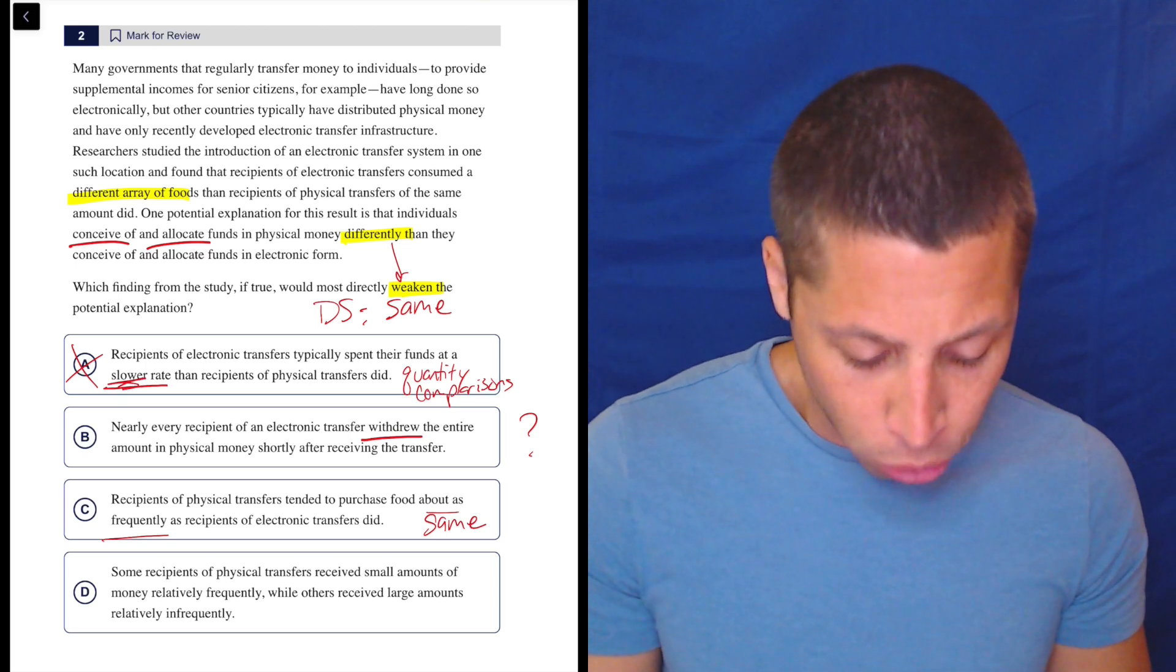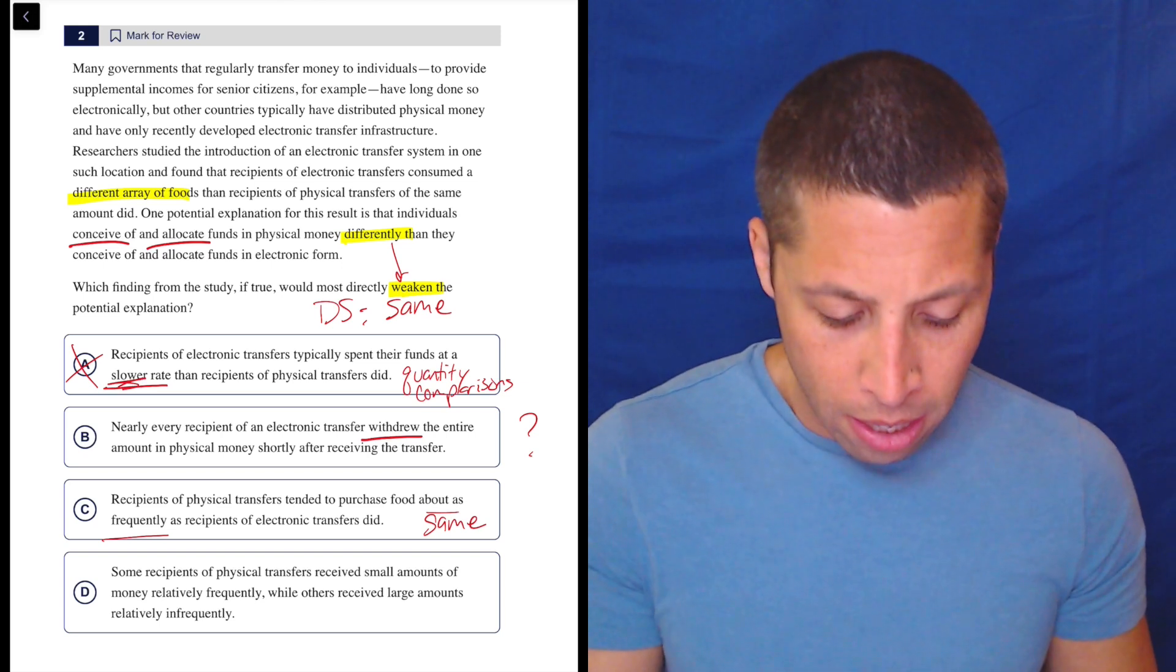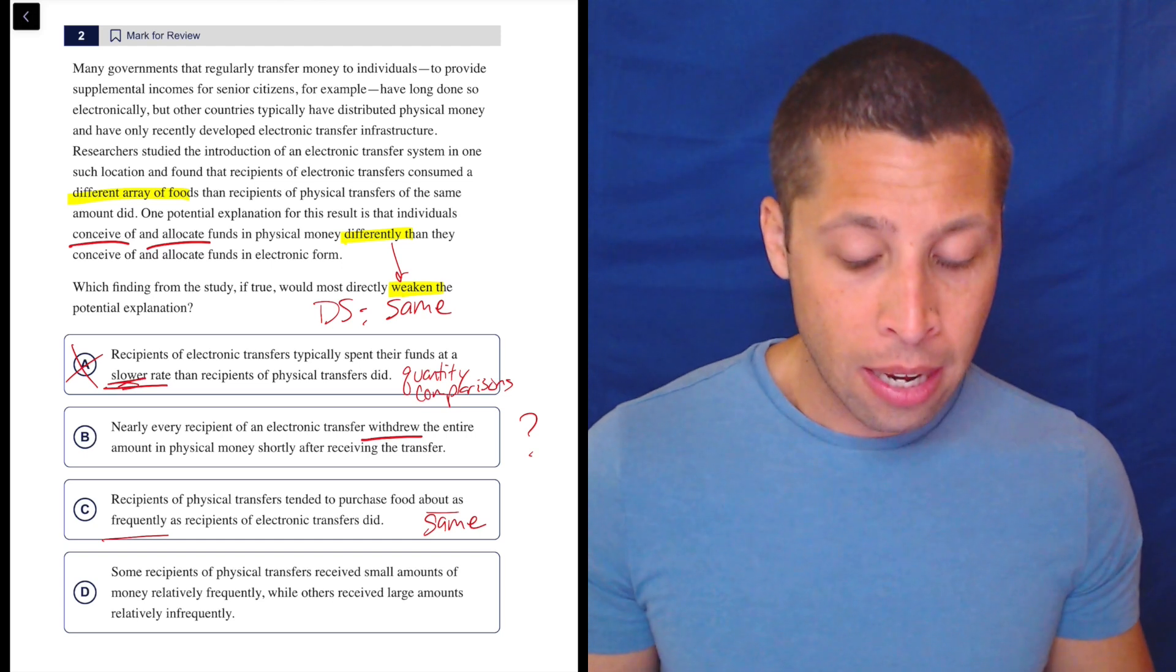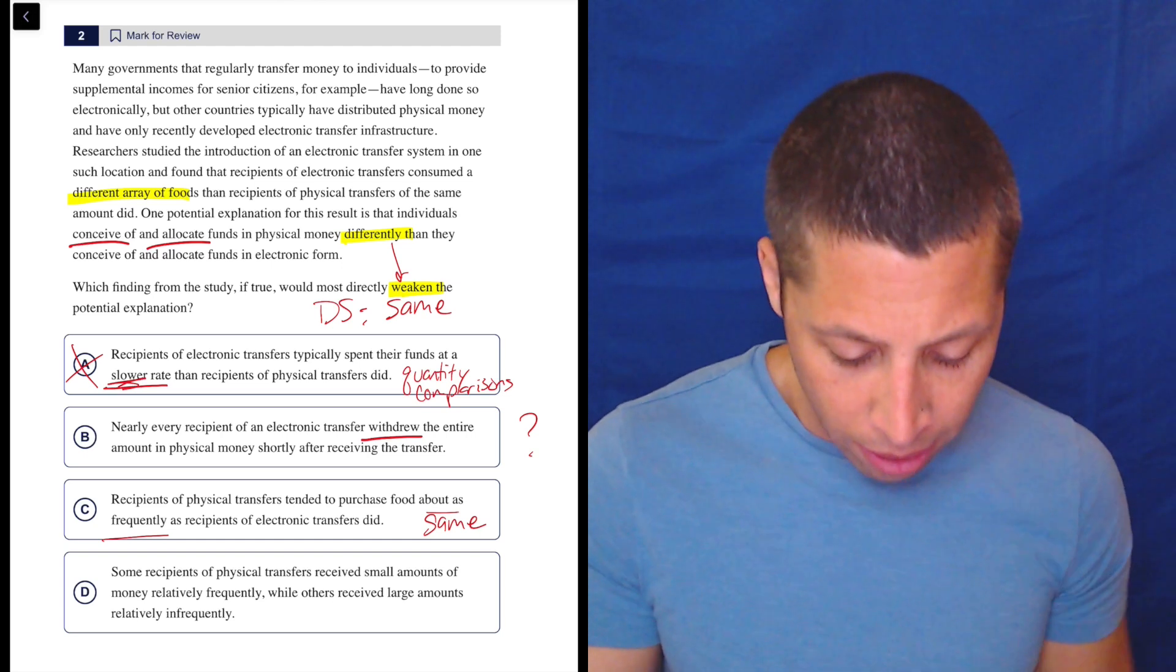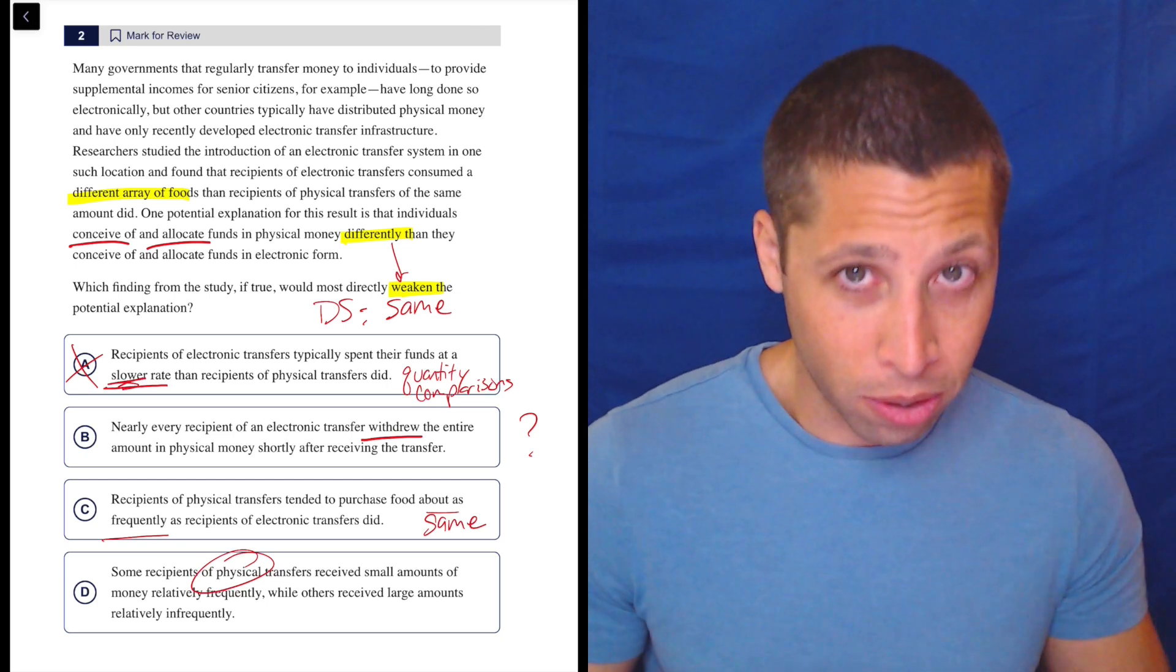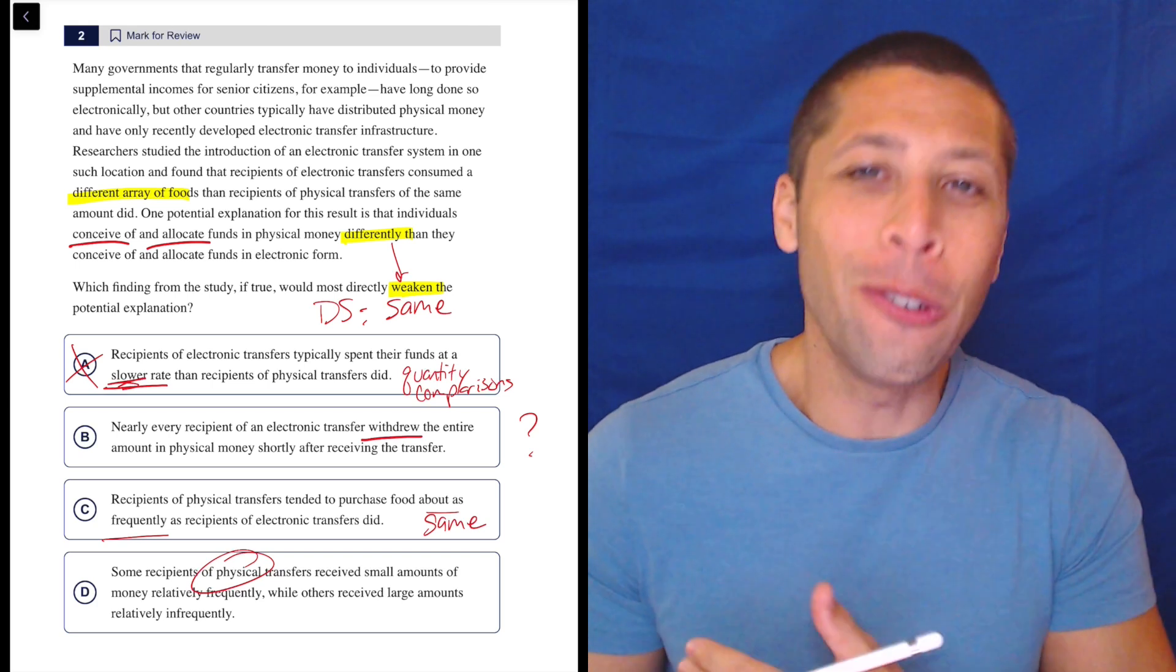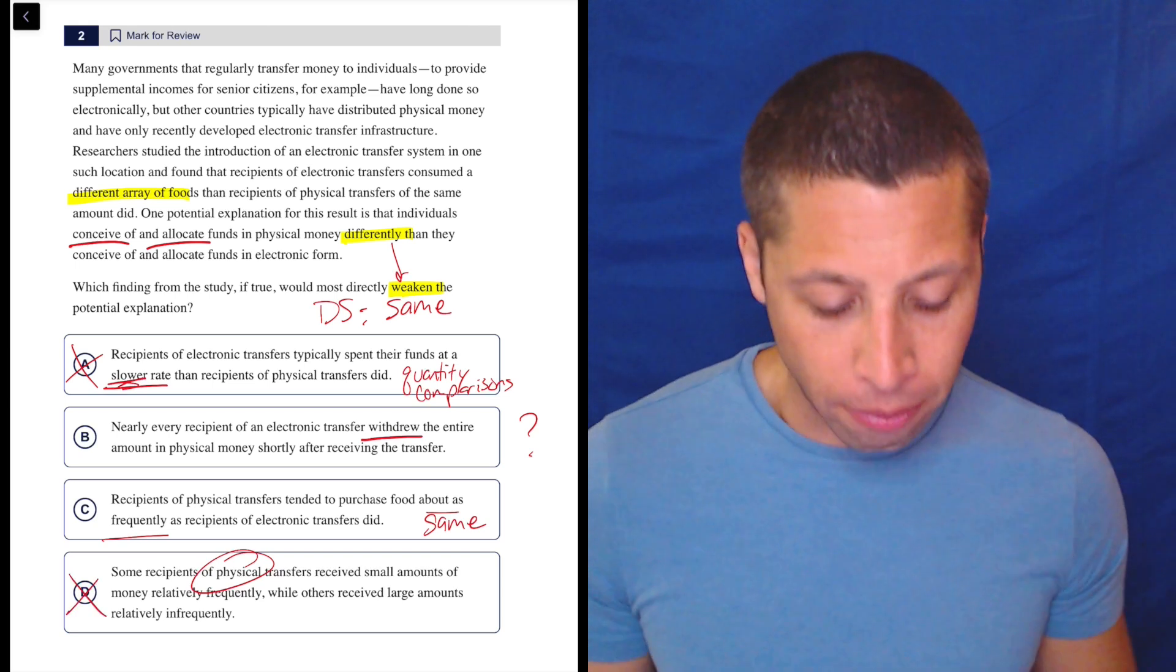D, some recipients of physical transfers receive small amounts of money relatively frequently, while others receive large amounts relatively infrequently. Well, again, that doesn't sound like a similarity because they're getting different amounts of money. But also, we're not comparing the right thing. We want to compare the physical money to the electronic. This is only about the physical. Unless I'm missing something here. But this choice is only about physical money. How are we undermining the conclusion if we're not even talking about the electronic money at all? So this feels very obviously wrong.